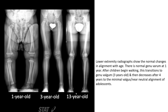We can see the normal change in alignment. There is genu varum at one year; after children begin to walk, this transitions. At three years old there is some valgus, which then decreases after four years old to minimal valgus near neutral alignment in the adolescent.